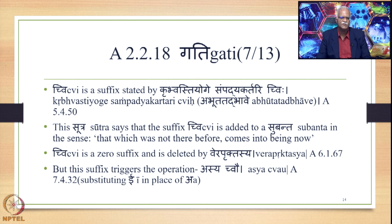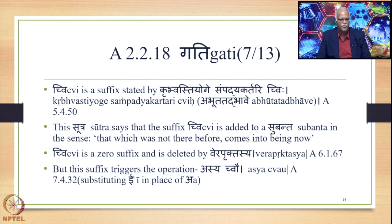The next word mentioned in the Sutra Uriyadi Chvidachascha is Chvi. Chvi is a suffix stated by the Sutra Kribbhasthi Yogi Sampadya Kartari Chvi — 5.4.50. There is also the word Abhuta Tadbhave in the same Sutra. This Sutra says that the suffix Chvi is added to a Subanta in the sense that which was not there before comes into being now. Chvi is a zero suffix and is deleted by Verapruktasya 6.1.67.